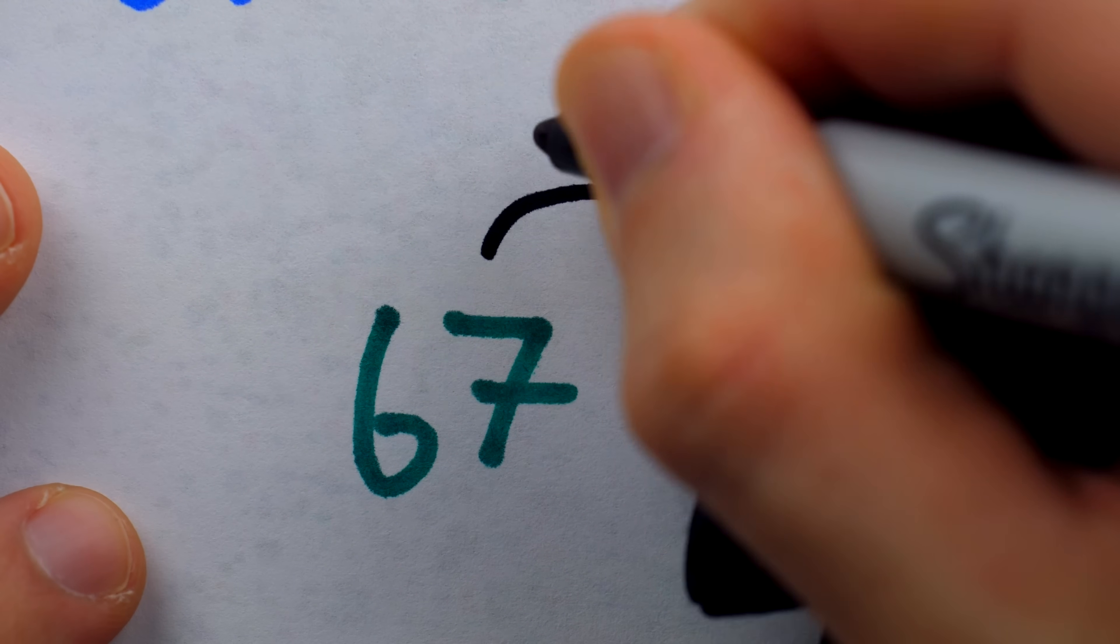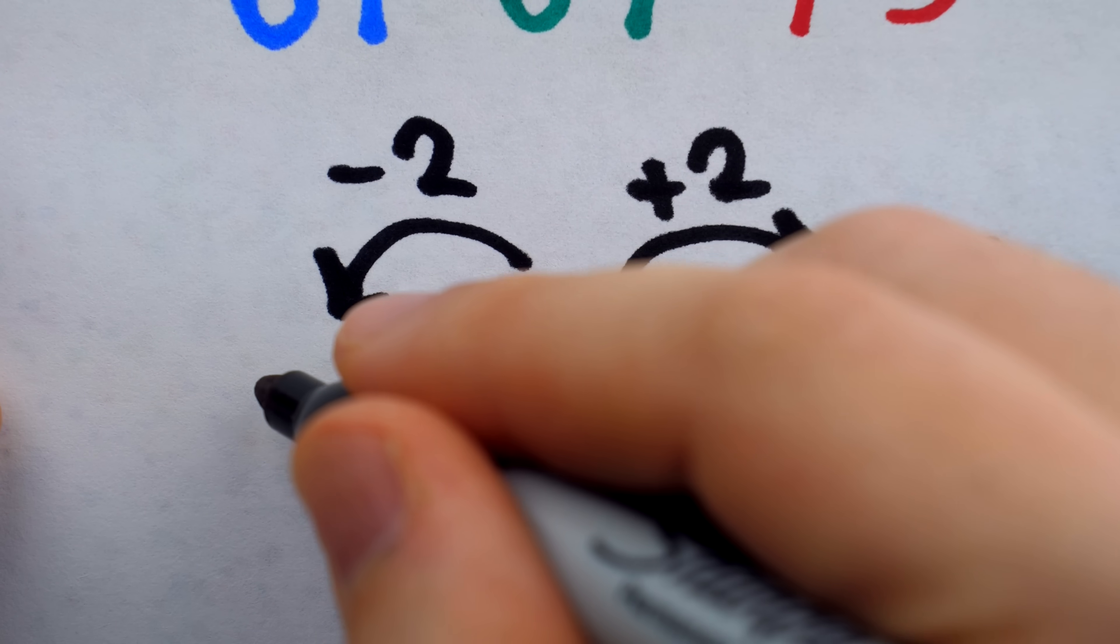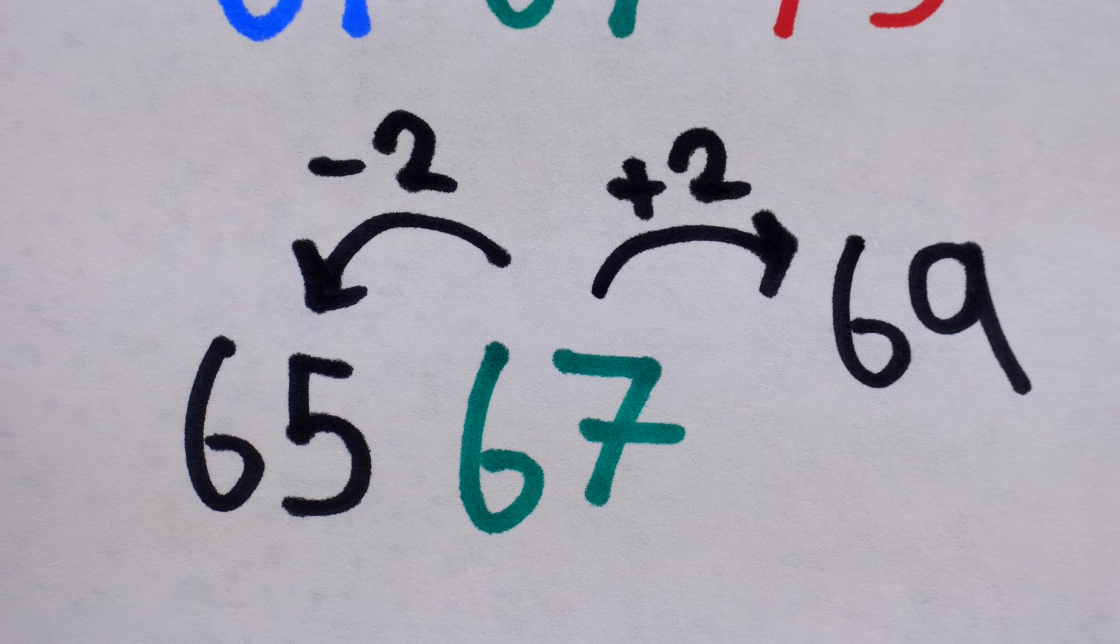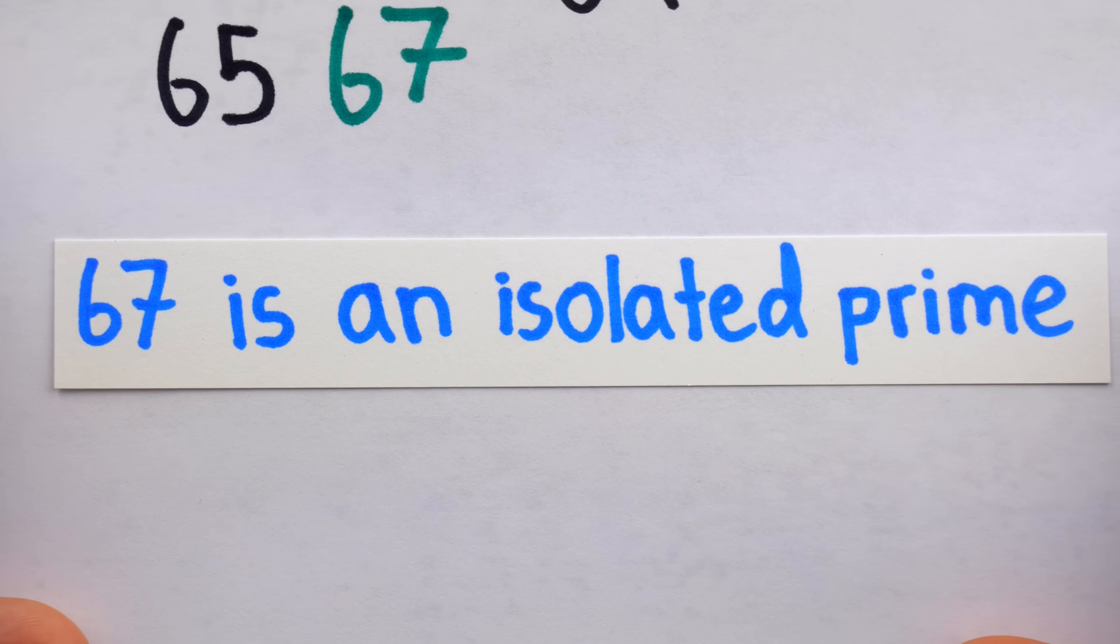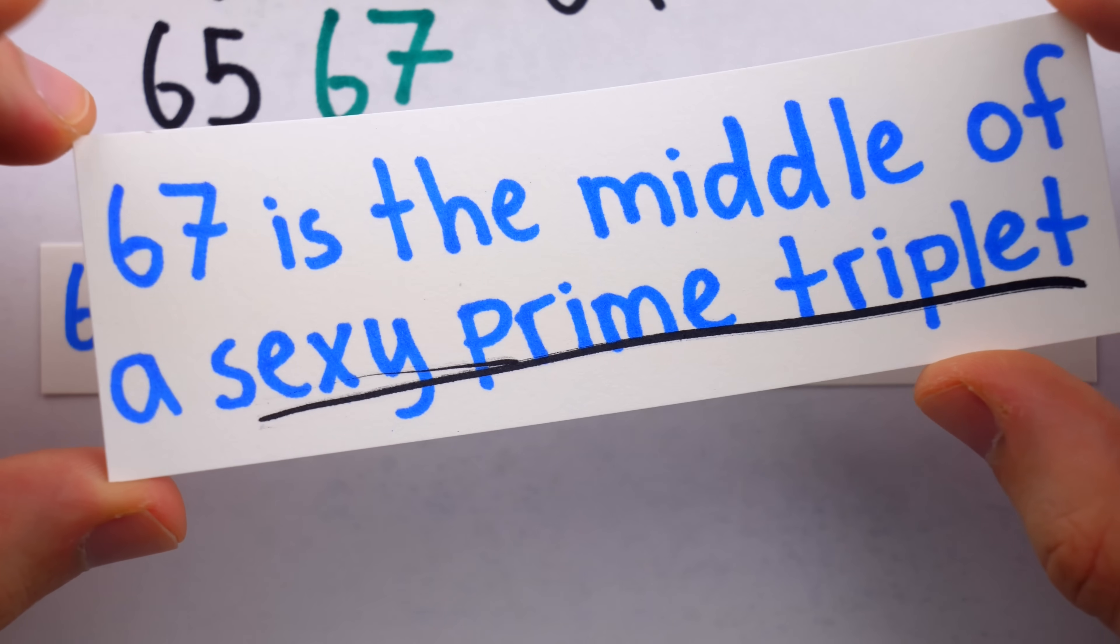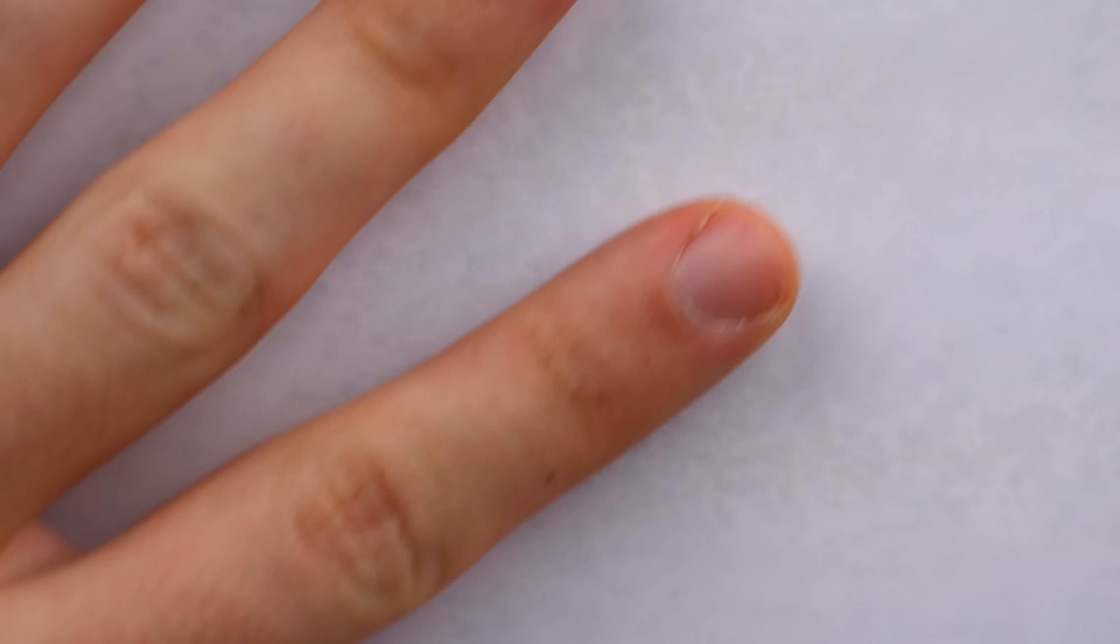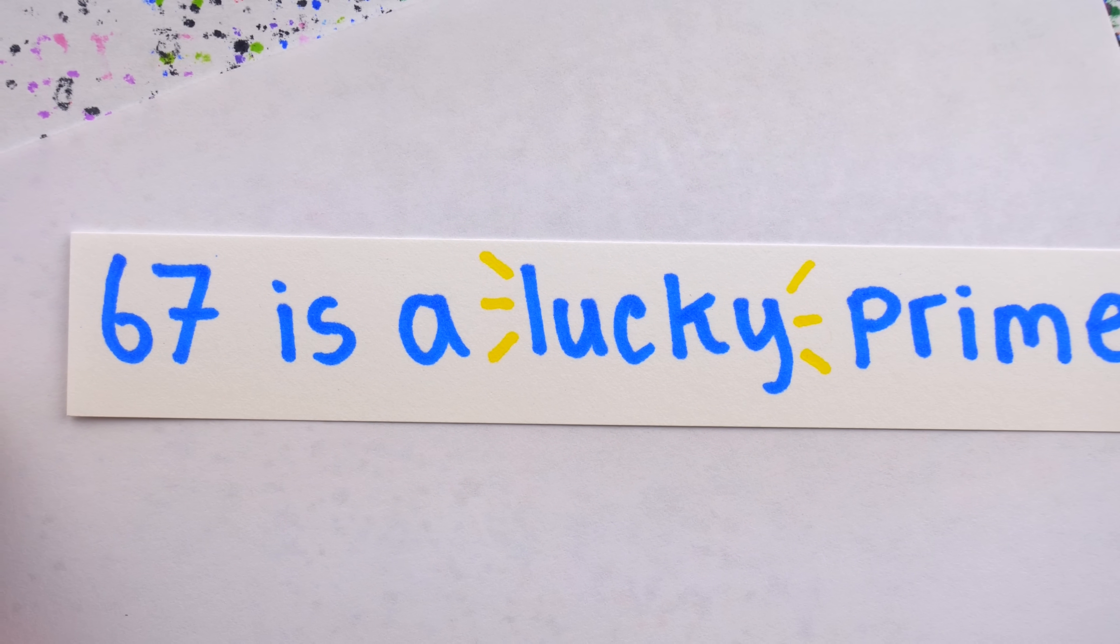While six up and six down both get us primes, the nearest possible primes would be two up and two down. But neither of these numbers turn out to be prime, making 67 what's called an isolated prime. How the turntables. One minute you're the middle of a sexy prime triplet, and the next you're isolated. Seems like bad luck, but hold up, 67 isn't just prime and super prime, it's what we call a lucky prime.